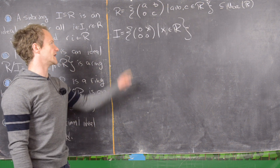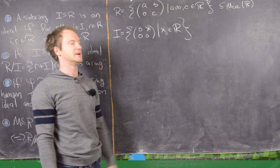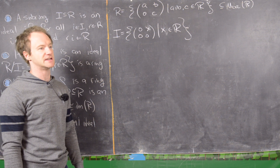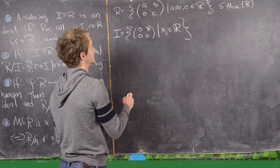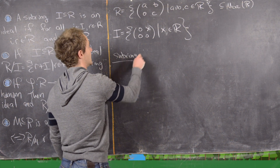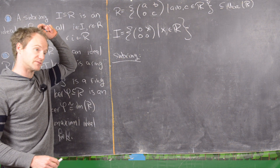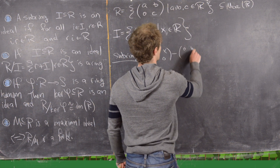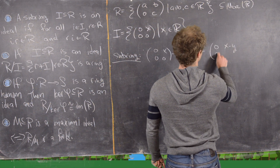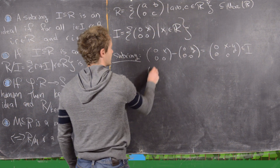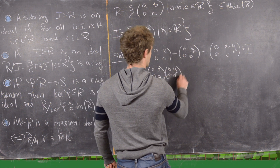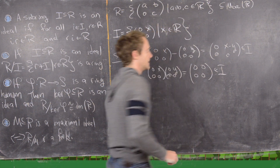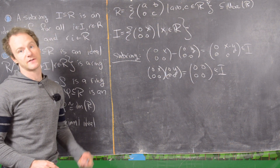The ideal we're interested in is I = {[0,x;0,0]} — matrices with only a possible nonzero entry in the upper right. To show it's a subring, note that [0,x;0,0] minus [0,y;0,0] = [0,x−y;0,0], which is in I. Also, [0,x;0,0] · [0,y;0,0] = [0,0;0,0], which is in I. So these elements are zero divisors, which is kind of interesting.